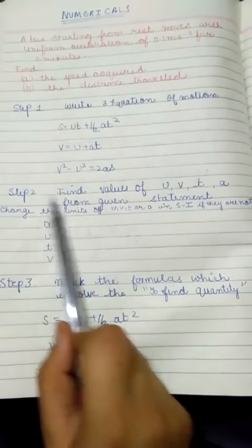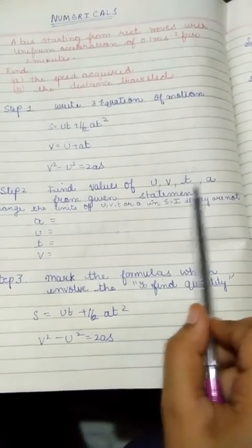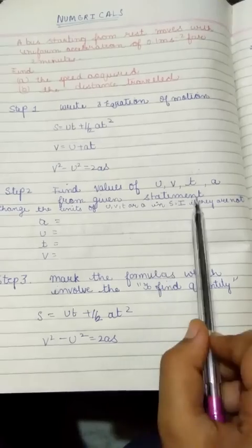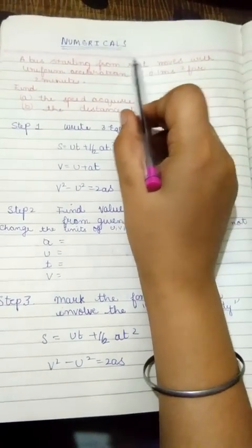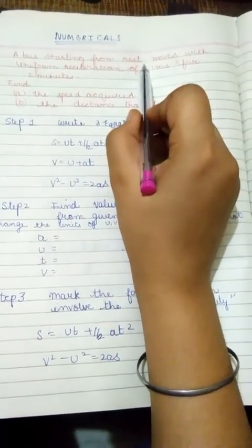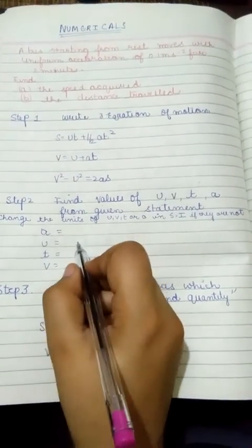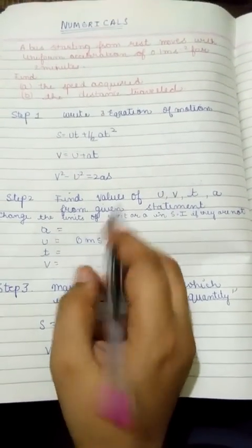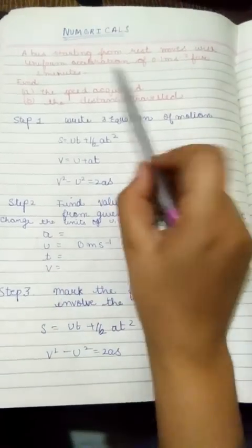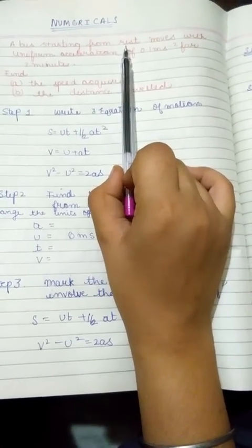Write 3 equations of motion to solve any numerical based on equations of motion. Step number 2, find values of u, v, t, a from the given statement. So let's find. U is equal to 0 meter per second.